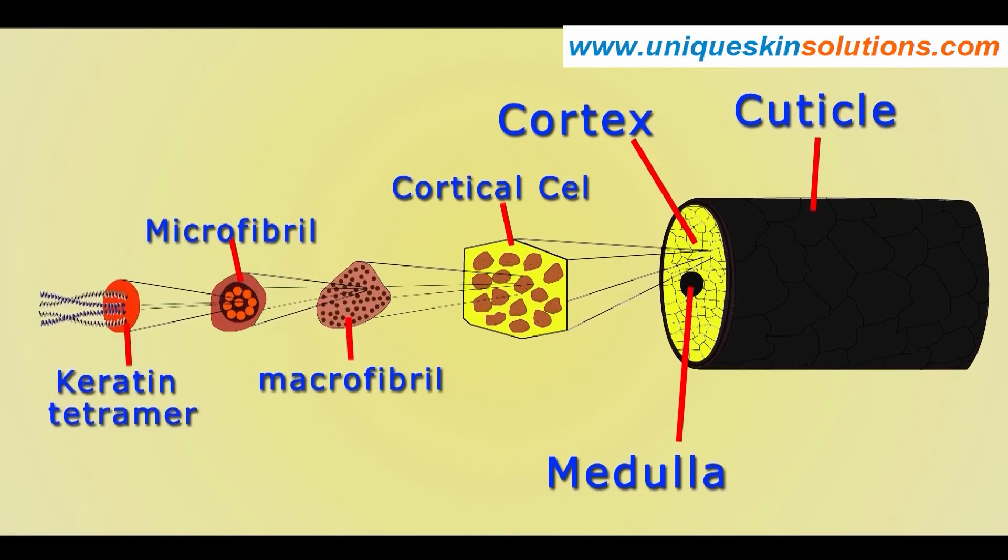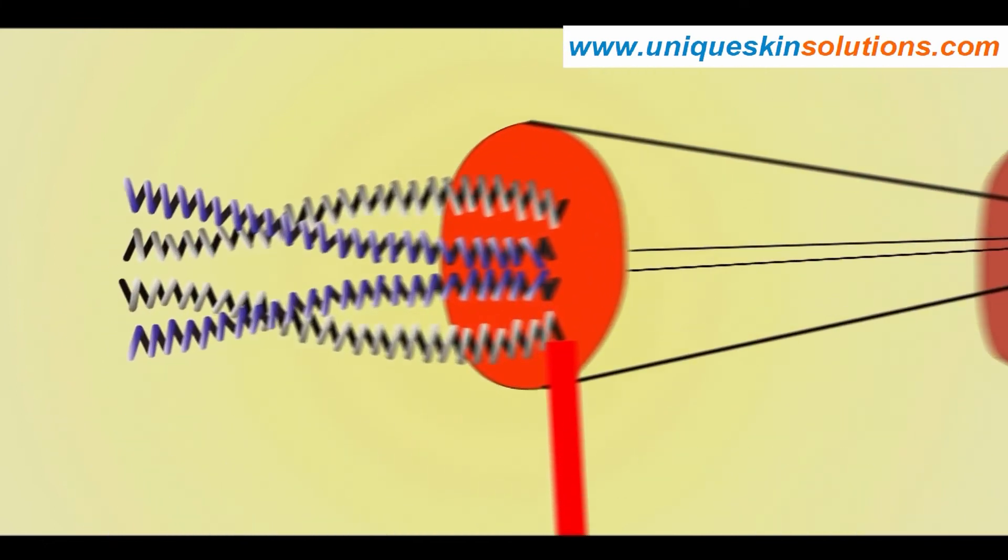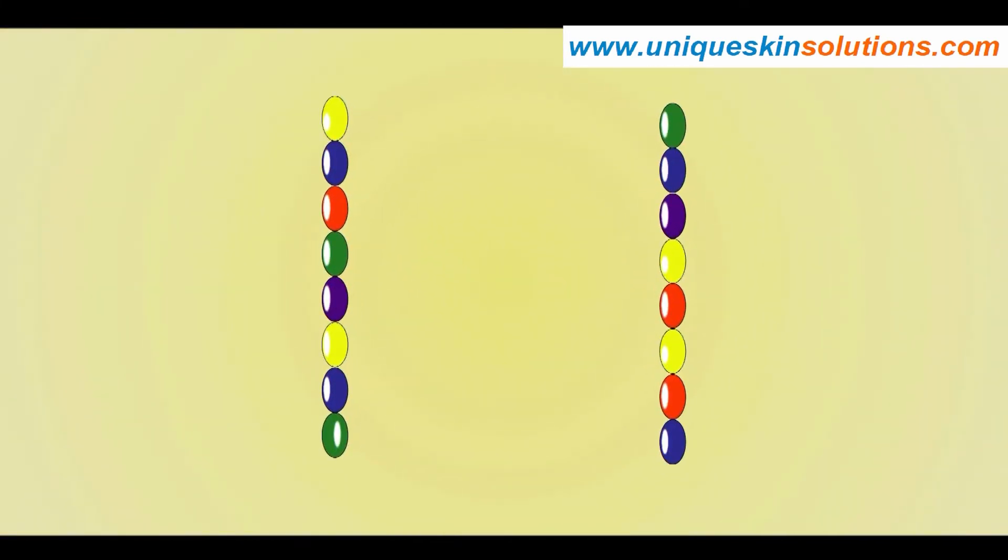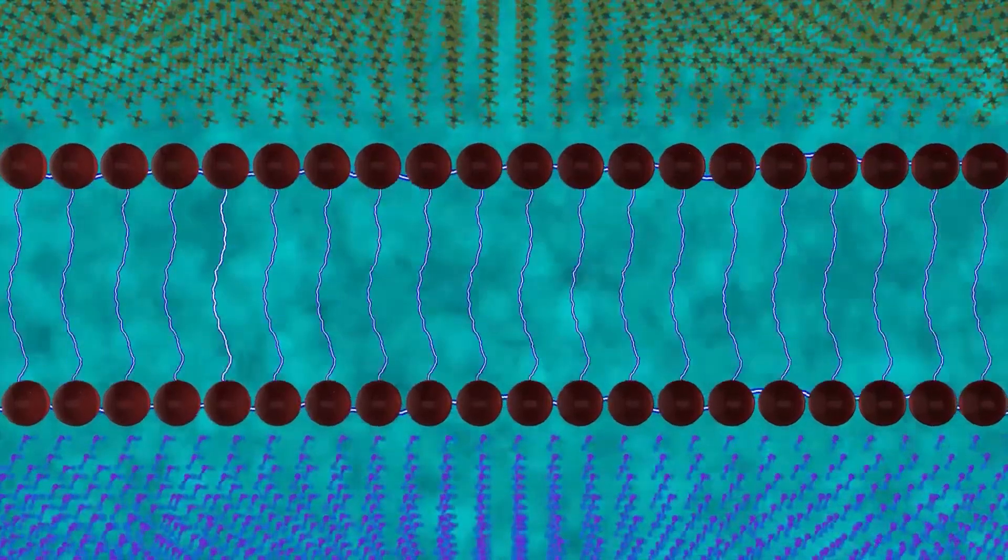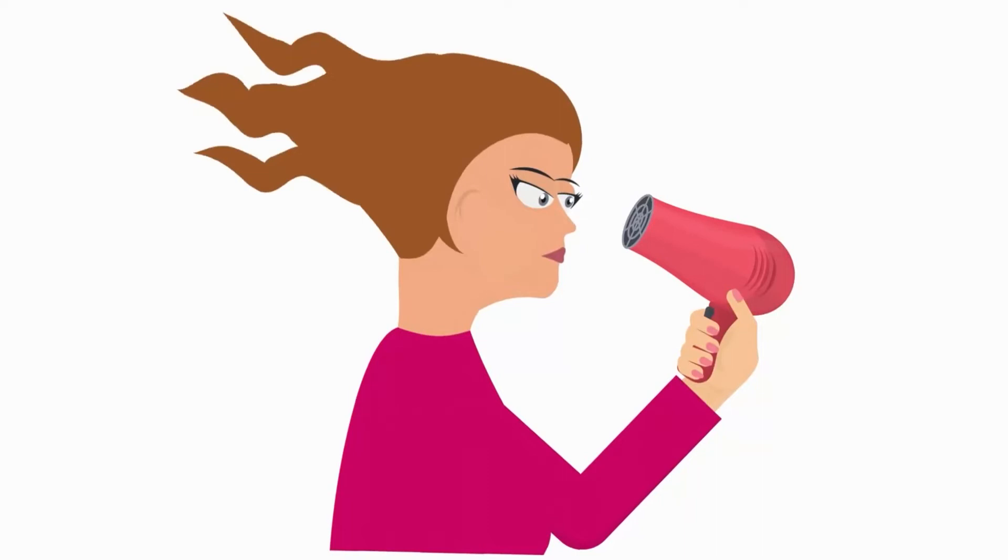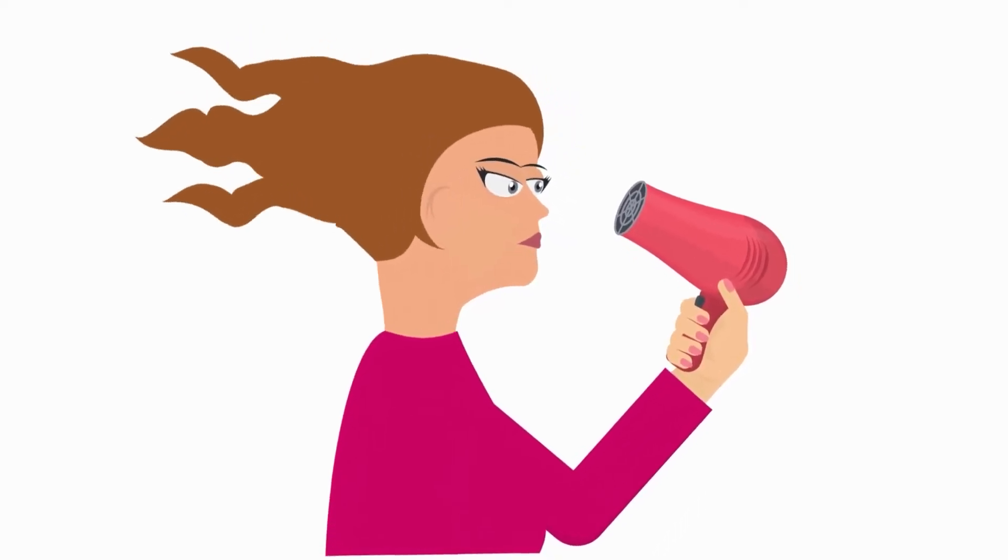There are three types of bonds in the hair: hydrogen bonds, electrostatic salt linkage bonds and covalent bonds. These bonds hold different keratin proteins together, giving strength to the hair fibre. Weaker bonds, such as hydrogen bonds, can be easily broken and reconnected.